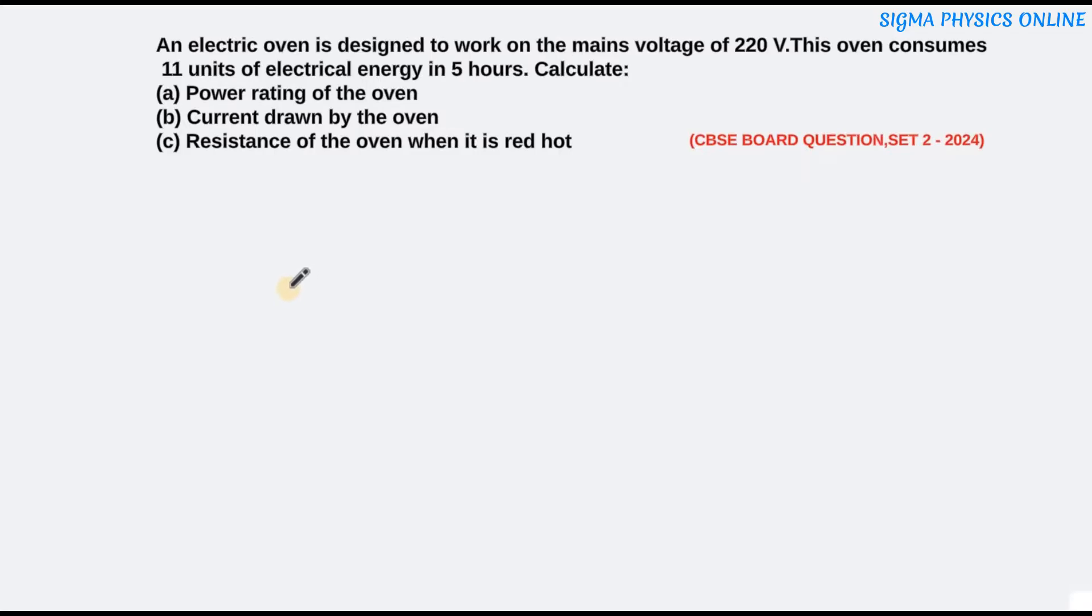Hello students, welcome back. Let's solve the next question. It's a question from the electricity chapter and it goes like this: An electric oven is designed to work on the mains voltage of 220 volts. This oven consumes 11 units of electrical energy in 5 hours. Calculate the power rating of the oven, the current drawn by the oven, and the resistance of the oven when it's red hot.